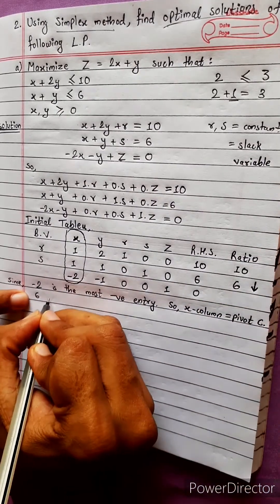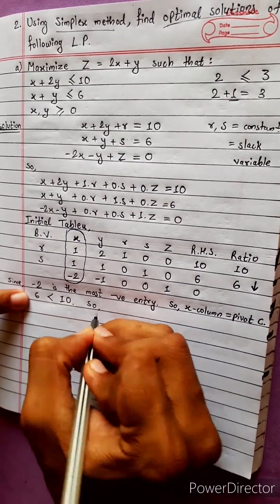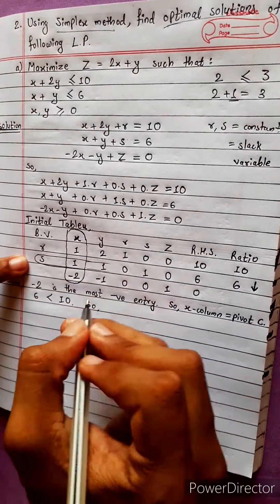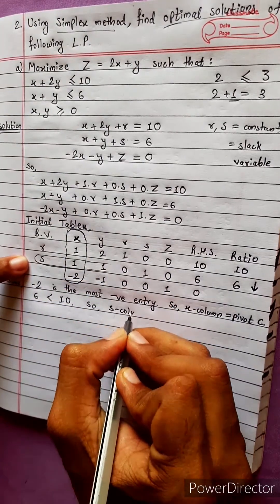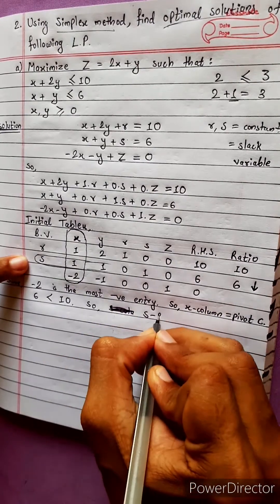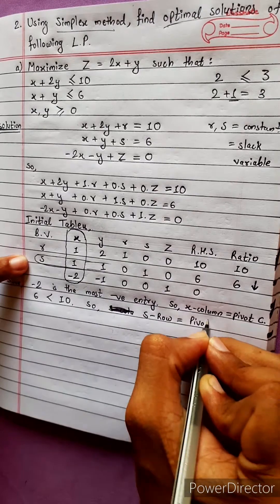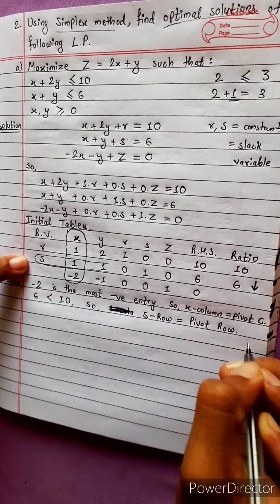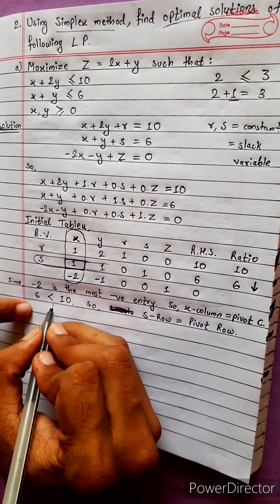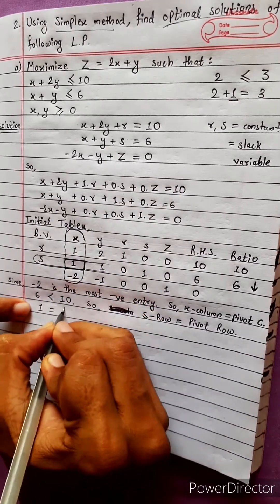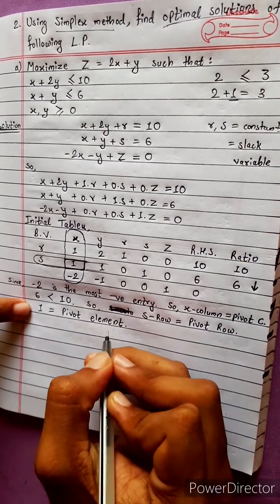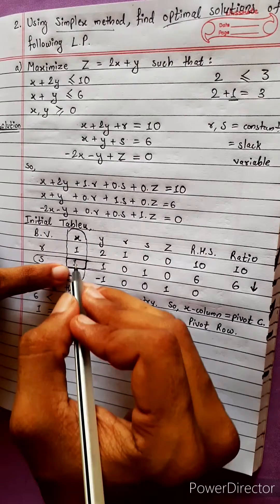Since 6 is less than 10, the minimum ratio is 6. So the s row is the pivot row. The pivot element is 1 (in the s row, x column). S leaves the basis and x enters.